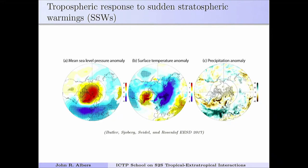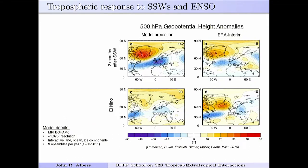What does that mean in the context of tropospheric teleconnection patterns? I'll show model results — these are ECHAM from Max Planck, very long runs with many ensembles giving a lot of statistical power. The top row shows 500 hPa geopotential height anomalies; left is model predictions, right is ERA-Interim. In the two months after a sudden warming, you get this negative NAO pattern, showing up in both model and ERA-Interim. The bottom panel shows El Niño in both model and ERA-Interim, and you get a similar pattern.